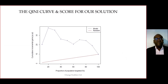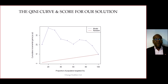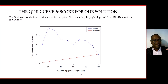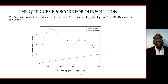Here is the Qini curve for the uplift model we've been looking at for our prescribed intervention — extending the payback period from 120 months to 126 months for customers with a credit score of zero. That is the Qini score. Ideally we would have liked it to be closer to one, but it does enable us to identify that target set of customers who benefit most from our intervention. We can also add the cost of intervention to our uplift model to enable us to perform a cost-benefit analysis.